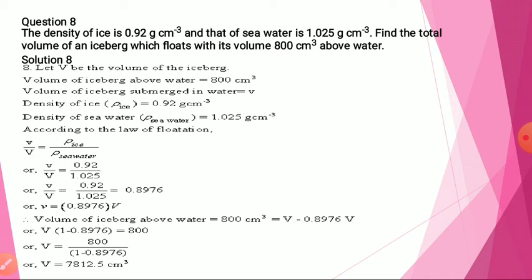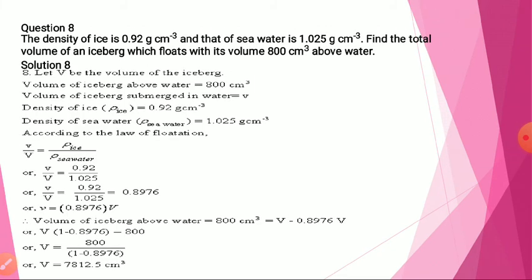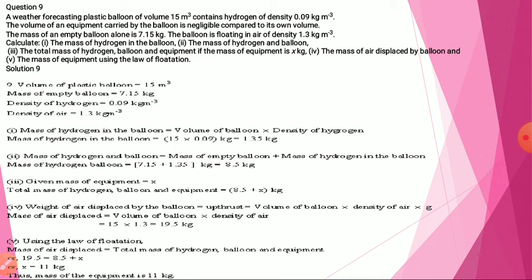We know the volume of iceberg above water is given, and by the relation we found the volume submerged in water is 0.8976 of total volume. The volume above water is total minus that, so with this relation we found the total volume. Now the last question: a weather-forecasting plastic balloon of volume 15 cubic meters contains hydrogen of a given density. The mass of the empty balloon is given and it floats in air of a given density. Find: the mass of hydrogen, the mass of hydrogen and balloon, the total mass, the mass of air displaced, and the mass of equipment.